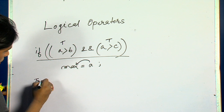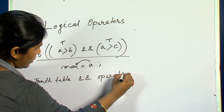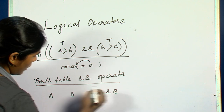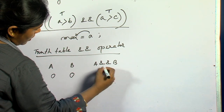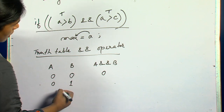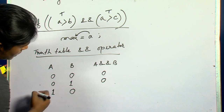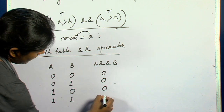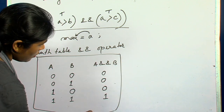The truth table for logical AND: if the first expression is 0 (false) and second is 0 (false), the result is 0. If first is false and second is true, the result is 0. If first is true and second is false, the result is 0. Only when both expressions are true does the result become 1. This is the truth table for the logical AND operator.